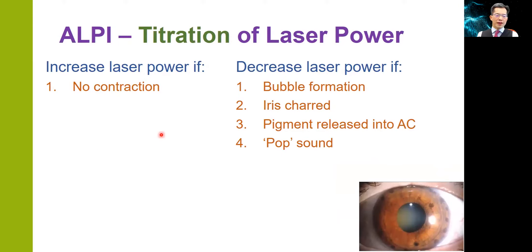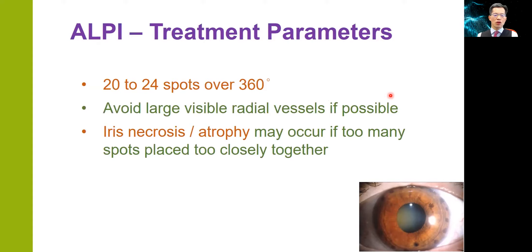While applying the laser peripheral iridoplasty, if there is no iris stromal contraction visible, increase the laser power. Alternatively, if you see bubble formation, iris charring, pigment released into the anterior chamber, or hear a pop sound, then decrease the laser power. Normally, we apply about 20 to 24 laser spots over 360 degrees of the iris. We avoid large visible radial blood vessels as far as we can, and do not place the laser spots too closely to each other, because otherwise there is an increased risk of iris necrosis and atrophy.